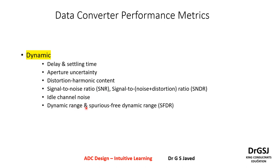Then there is dynamic range and spurious free dynamic range. Dynamic range is the amount of input you can give without saturating the output. Spurious free dynamic range is how much input can be given without any spurious noise frequency appearing within the dynamic range that would cause earlier saturation. We will look into each one of these details in the next class.